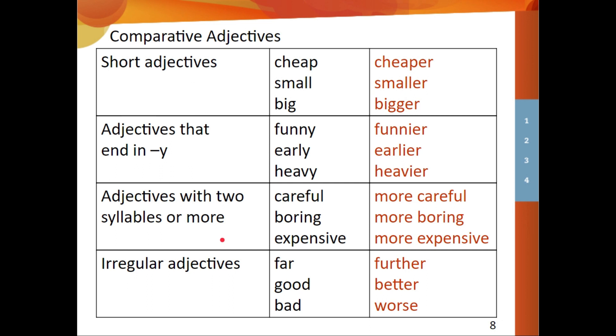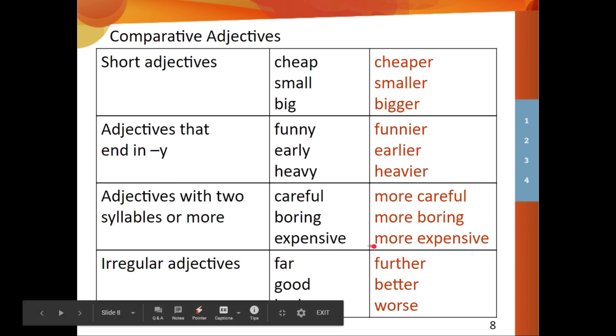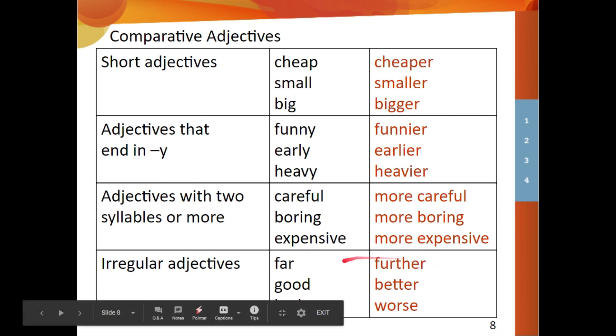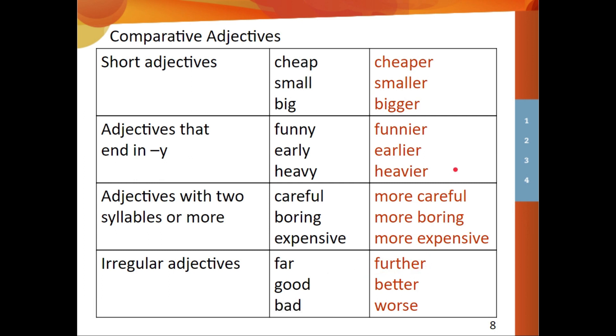Now adjectives with two syllables or more like careful. We're not going to use the ER thing we are doing here. We're not going to change the end of the adjective. Instead, we are going to add the word more. So we say careful, more careful. Boring becomes more boring. Expensive, more expensive. And we also have irregular adjectives. For example, far becomes farther. Good, better. And bad becomes worse. So these are the comparative adjectives we want to review today and that we practice in class when we talked about marine animals.